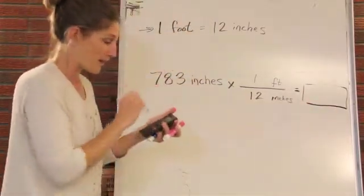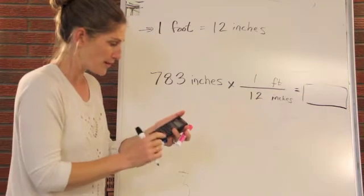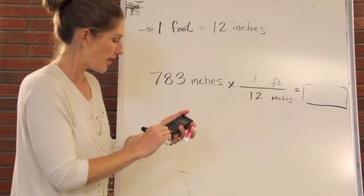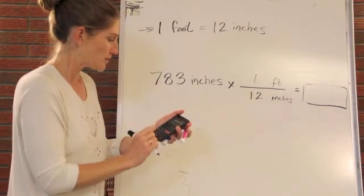So if we just type that in, I can't do this in my head. So 783 times one is 783, and then we're going to divide that by 12 inches.